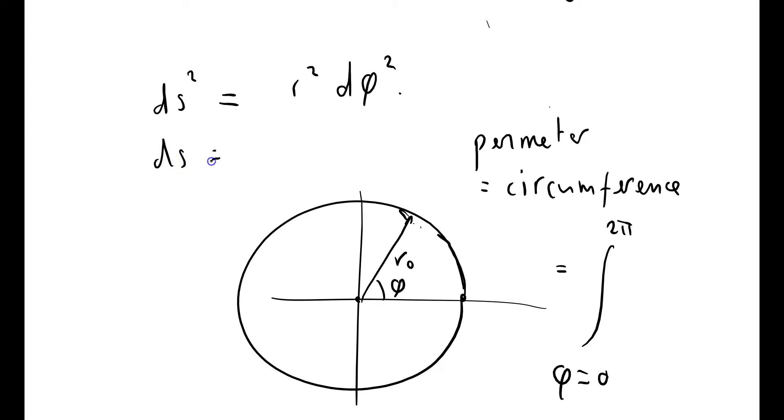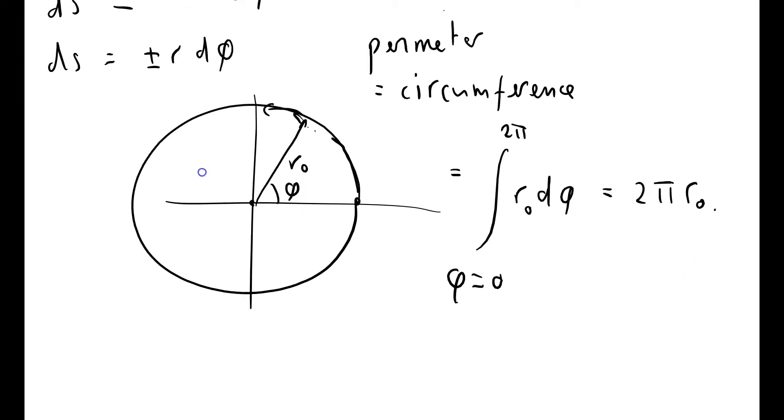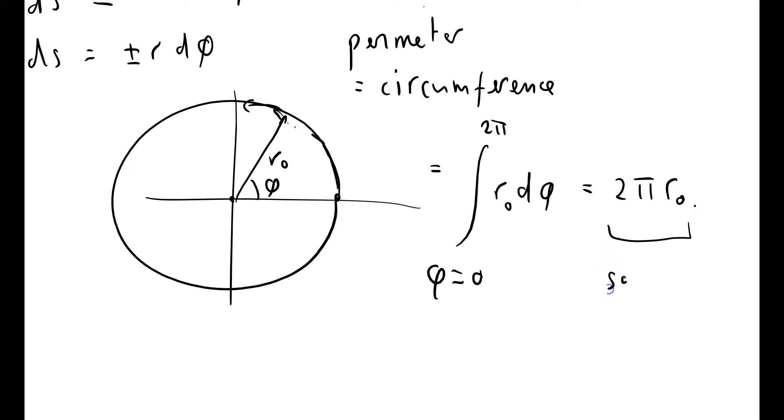So that says that ds equals plus or minus r d phi. It's plus or minus because we can go round clockwise or anti-clockwise. So it's r0 d phi equals 2 pi r0, which is not as obvious as it looks. Of course the circumference is equal to 2 pi r0, but this is the same as flat space. And it's not flat space. So that is a non-obvious result.